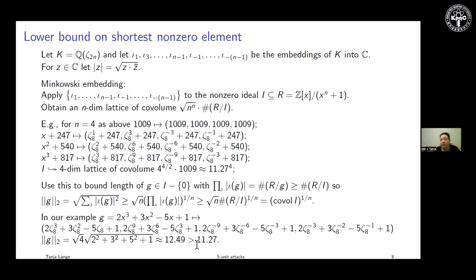We're not at the lower bound, but there's also no guarantee anything exists that small — we just know it can't be smaller. Any g obtained as a linear combination is still an element of the ideal, so we can lower bound the 2-norm of the element using the nth root of the co-volume of the ideal. Given the ideal, you know where you might want to go, and you can compute this even if the ideal doesn't have a nice basis.